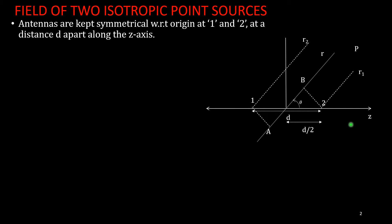Consider a case where we have two antennas placed symmetrically with respect to the origin, separated by a distance d along the z-axis. The angle from the z-axis is theta. With respect to the origin, we draw a ray path to our point of interest P, and our aim is to compute the electric field at point P.